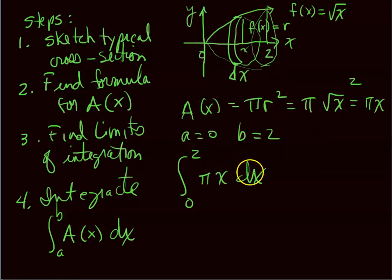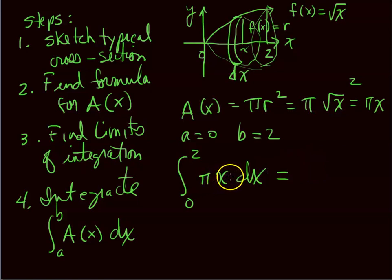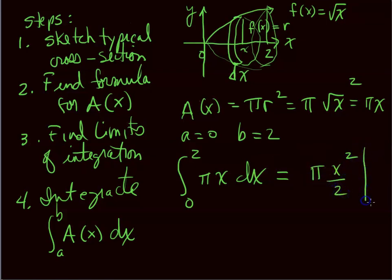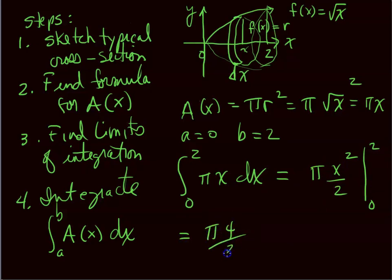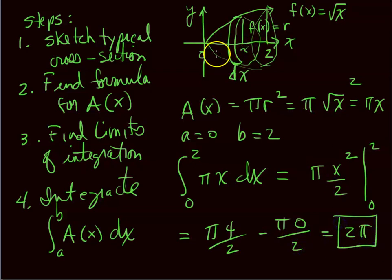This is the area of the base times the dx height. Integrating: π x²/2, evaluated from 0 to 2. Plugging in 2: π(4)/2 minus π(0)/2, which gives 2π. That is the volume of this solid.